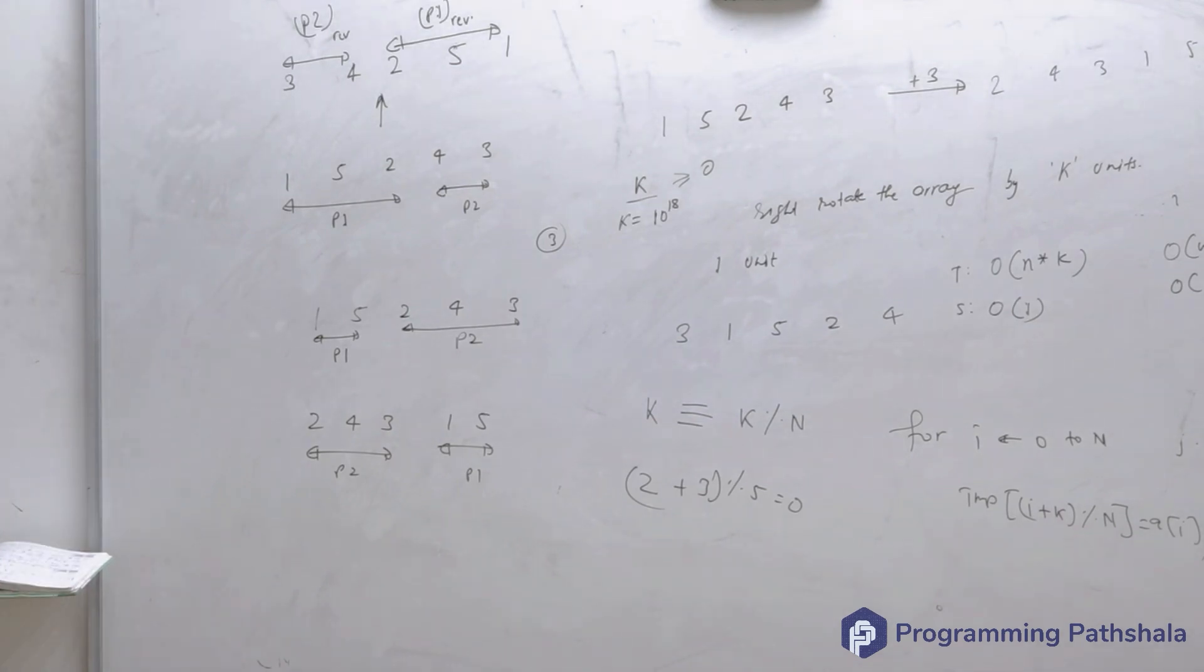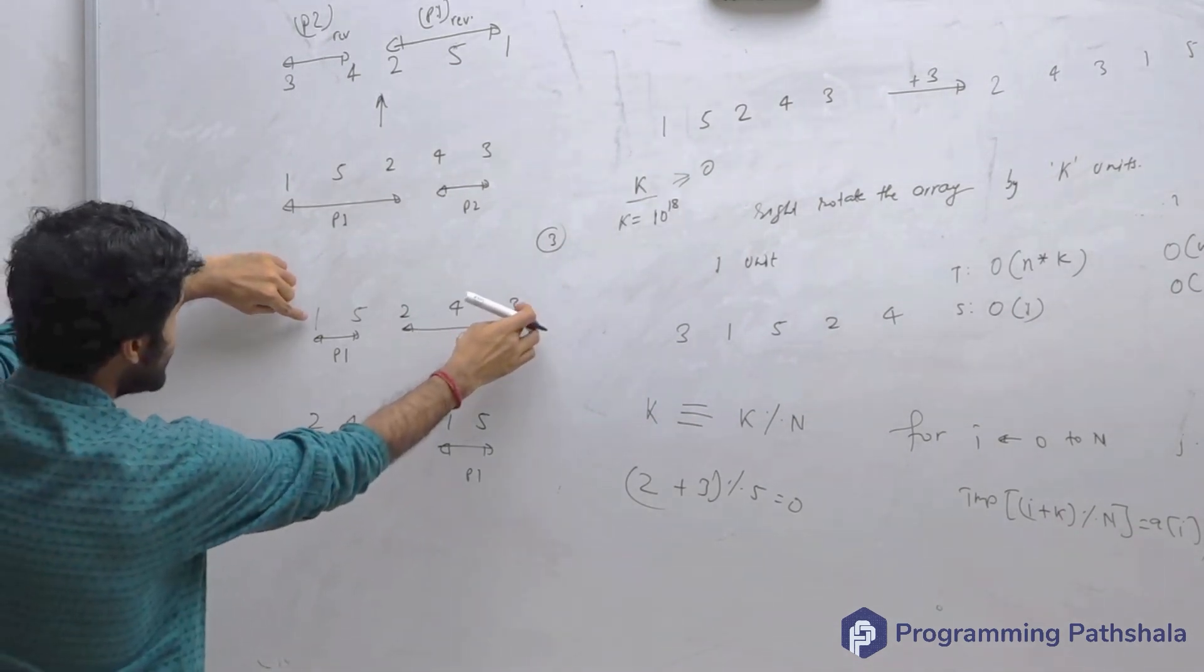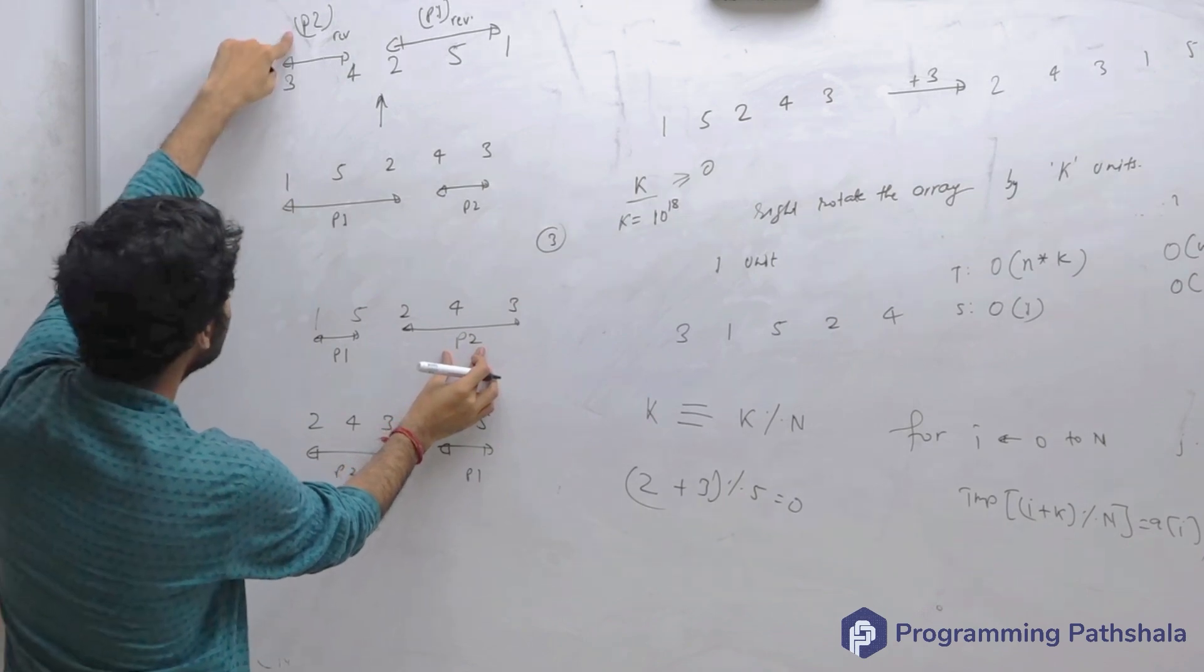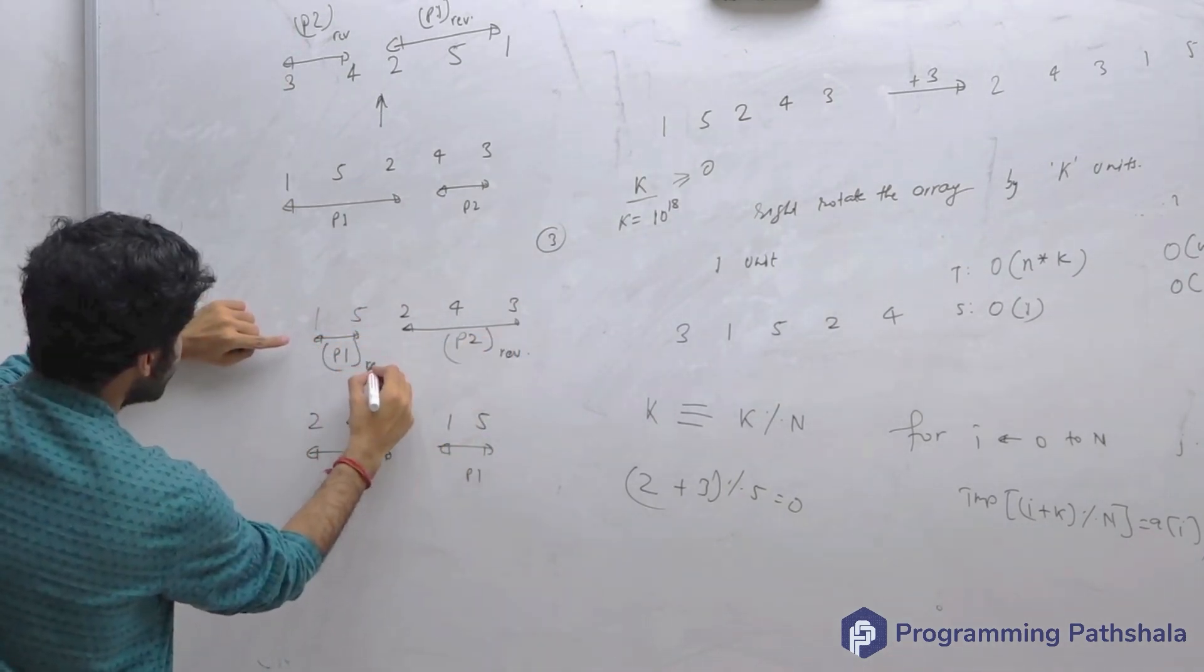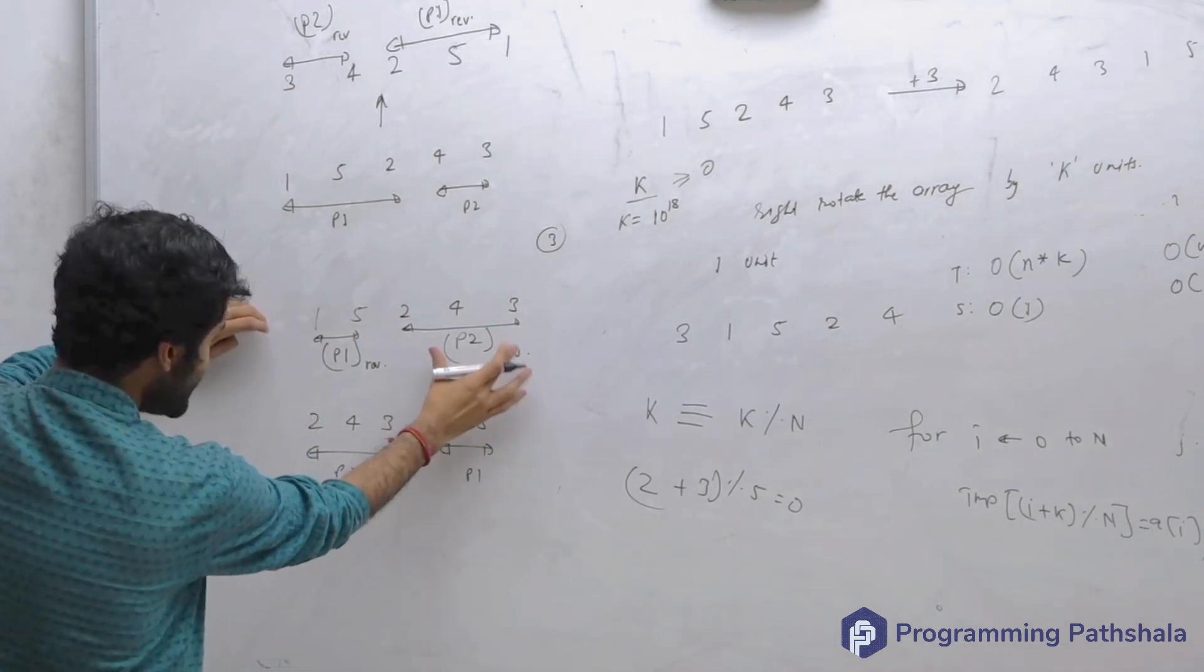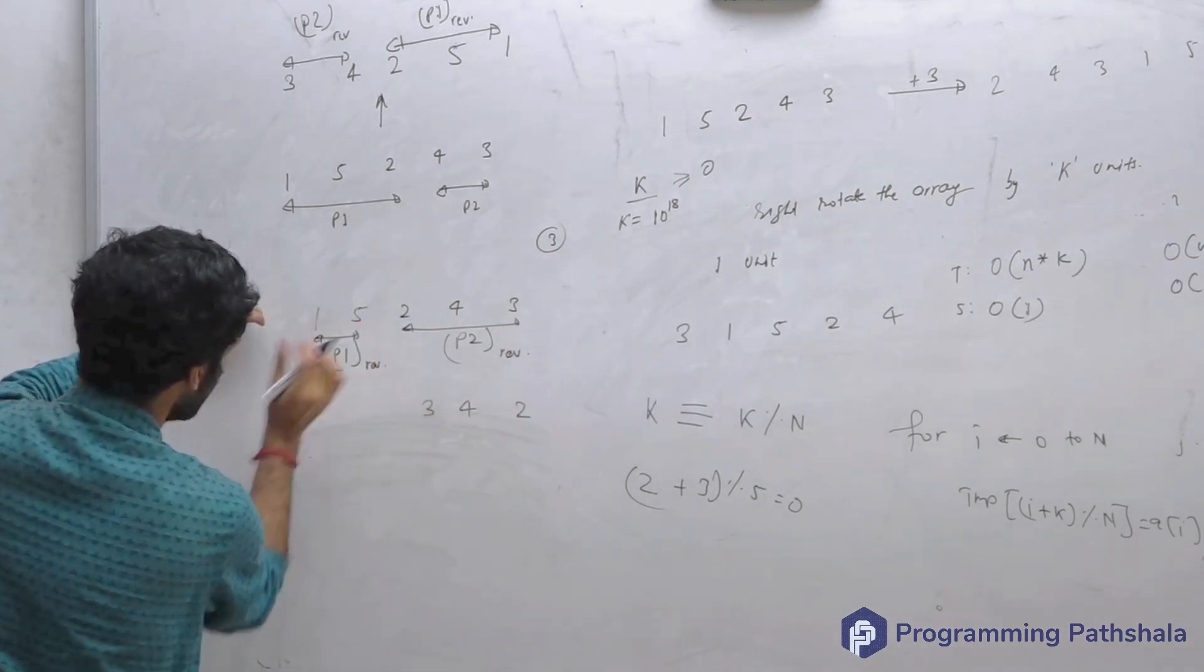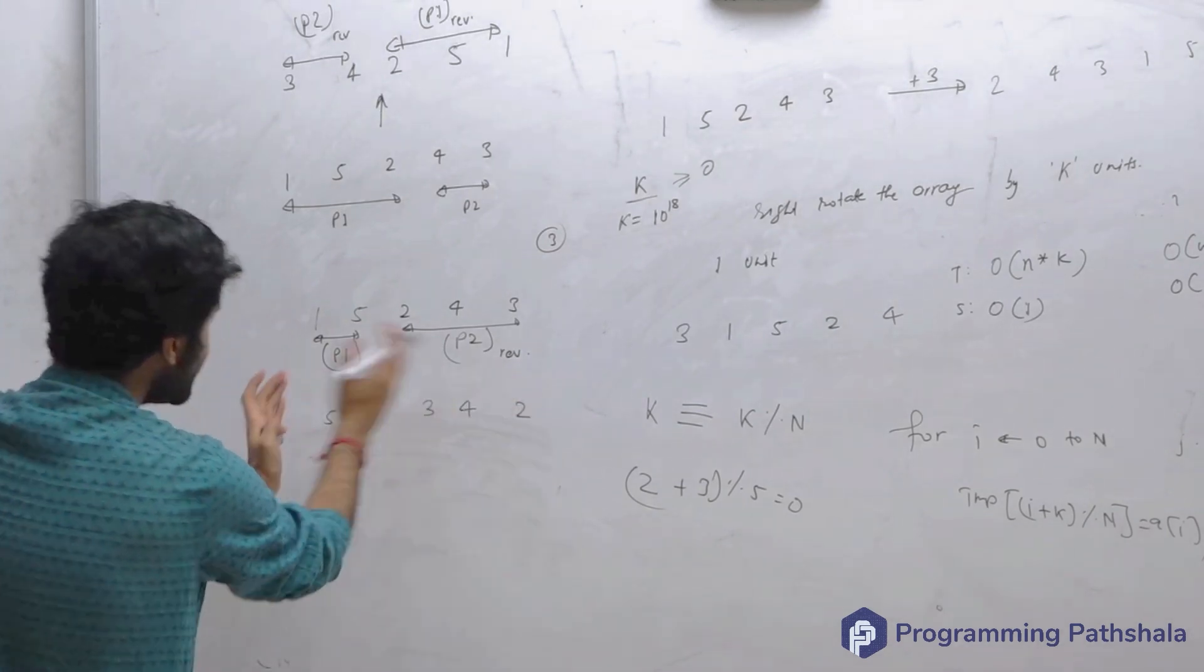So can I not do something like this? If I am reversing this array, then what happens is that instead of p2 I am getting p2 reverse. So first let me reverse it, and let me reverse this also. What will happen? If you reverse this portion, you would get 3, 4, 2. And if you reverse this portion, you will get 5, 1. And now if you reverse the entire array, you will get 2, 4, 3, 1, 5.